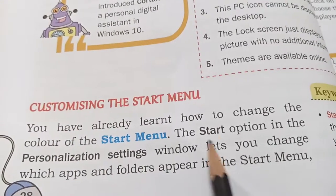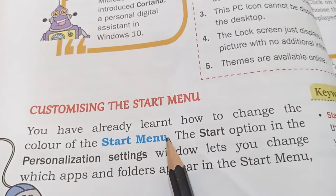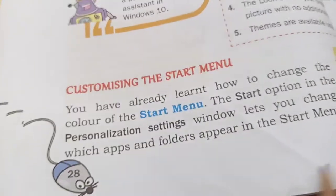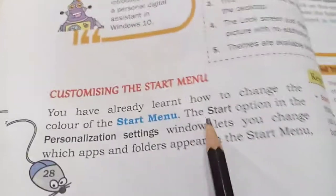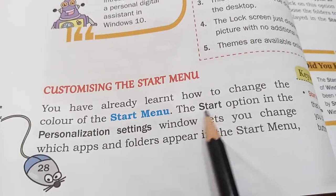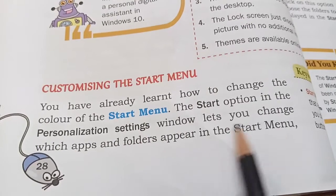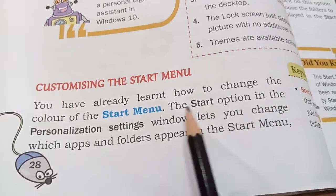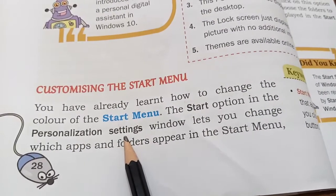You have already learned how to change the color of the start menu. We covered this when we were looking at desktop settings and theme settings. We saw how we can use the Start option in the personalization settings window to change which apps and folders appear in the start menu.